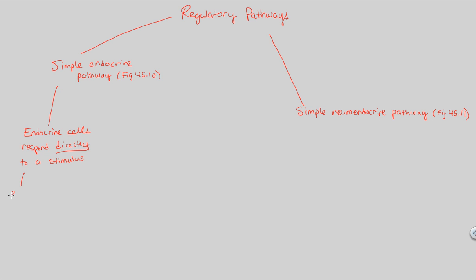To produce a response, you need either an external or internal stimulus, and you need detection of that stimulus. Once detected, endocrine cells will secrete hormones. Because hormones are chemical signaling messengers, they have to travel far — they hop onto the bloodstream highway. Hormones are secreted into the bloodstream as a way to move a message from one part of the body to another.